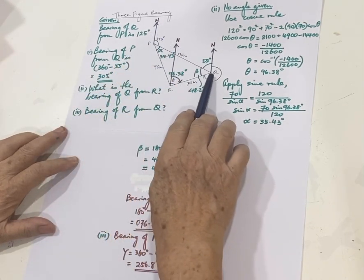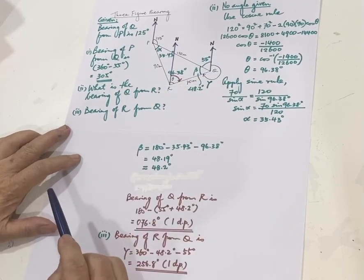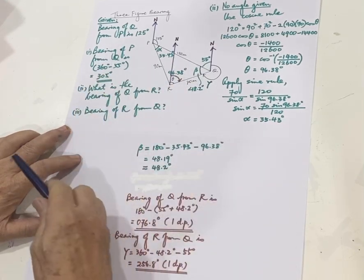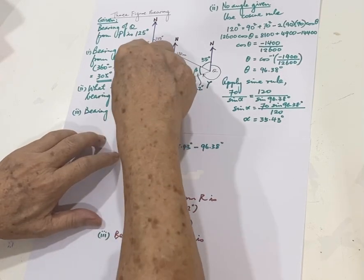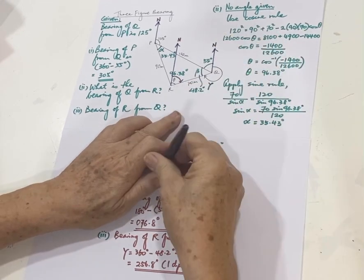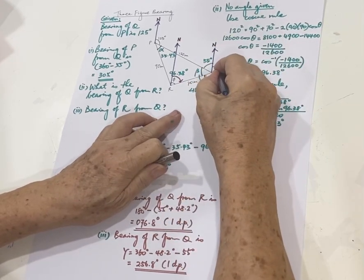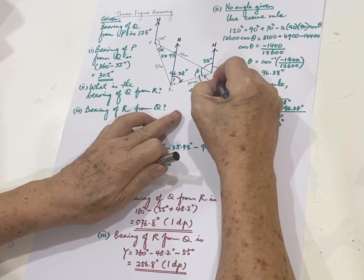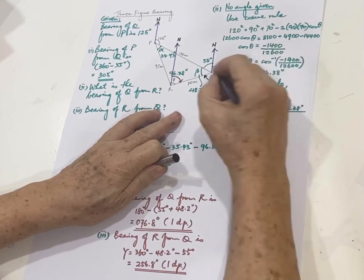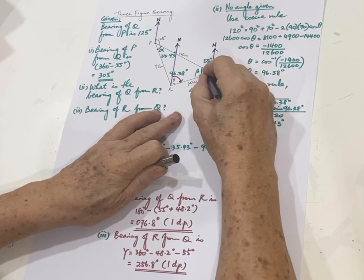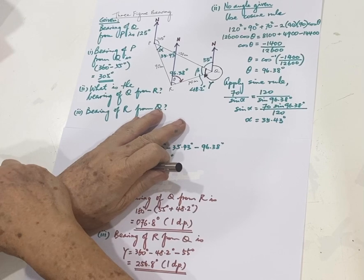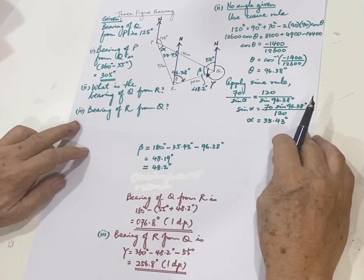What students should do is draw two arrows pointing to the north and since they are parallel, so this angle is 55. But then when you say bearing of P from Q, you stop your pen or finger here and this is the bearing we want. From Q means you stop at Q, don't confuse. So this is bearing of P from Q, so it should go all the way here, so it's 360 minus 55, so the three-figure bearing is 305 degrees. Pretty straightforward.